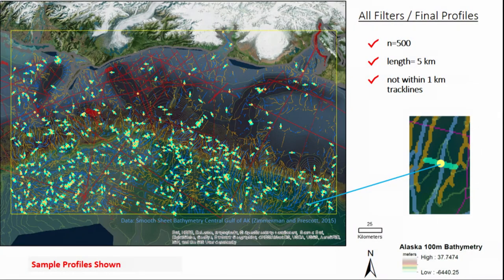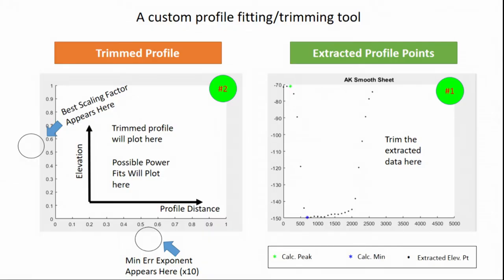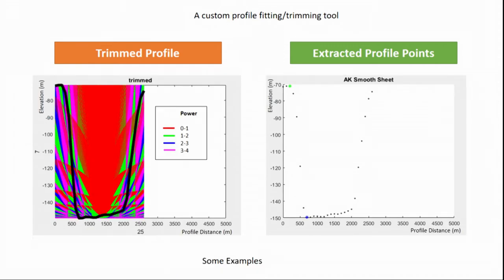This is the distribution of samples we've taken — 500 profiles randomly distributed throughout the Gulf of Alaska. All of our profiles were five kilometers long, and we trimmed them in another software that I wrote. I actually wrote a little script in MATLAB. In window one, it pops up your extracted profile data, and your job as the user is to click on the minimum, the left max, and the right max. It extracts that profile data and then runs some statistics on it in window number two.